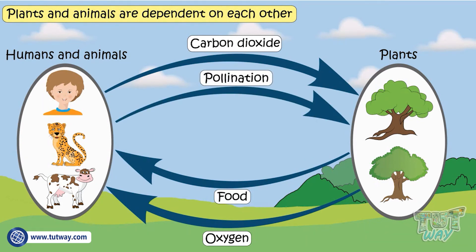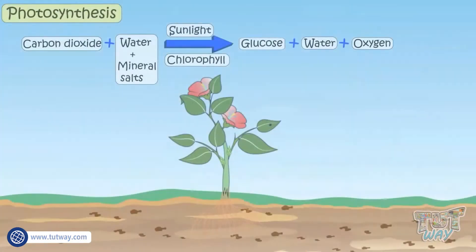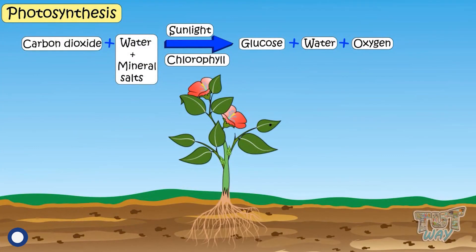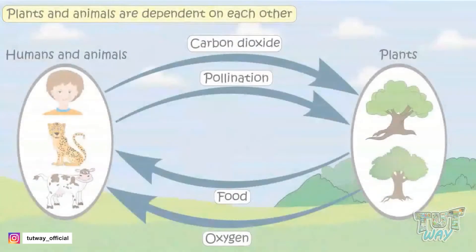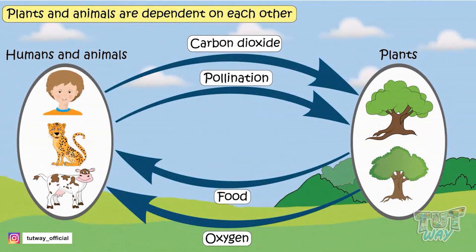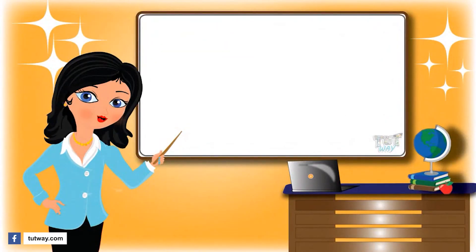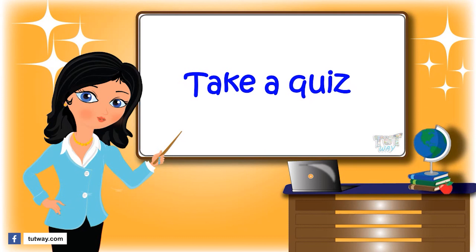So kids, today we learned how plants prepare their own food and how animals and plants are interdependent on each other. Now go ahead and take a quiz to learn more. Bye-bye!